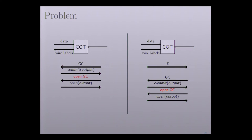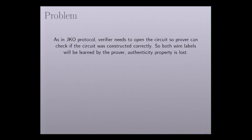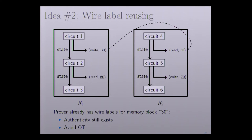But there is a big problem. In the original JKO protocol and in improvement one, we need to open the garbled circuit, which means both wire labels will be revealed to the prover, and then the authenticity property is lost. By authenticity, I mean that before the proof, the prover only knows one of the two wire labels, and after the proof, we still have the same property — the prover still only knows one of the two wire labels.